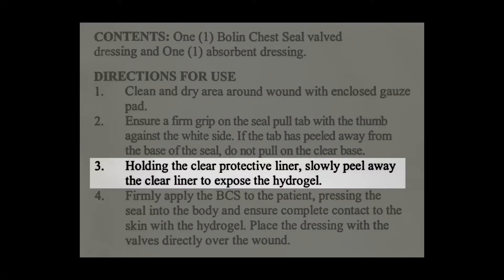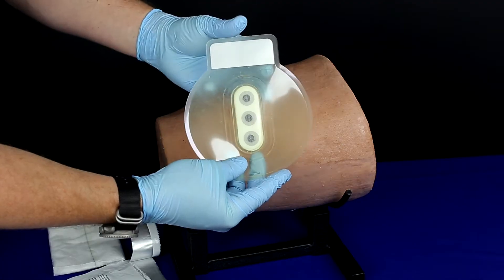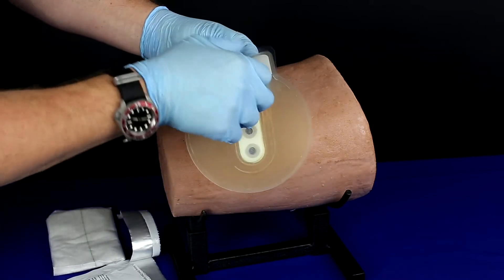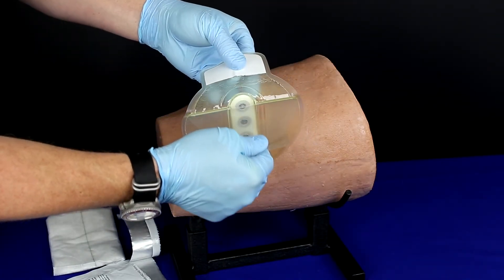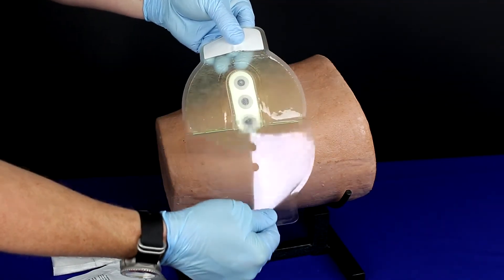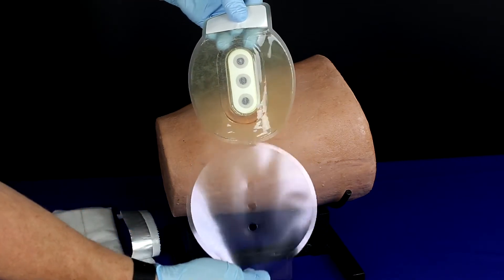Holding the clear protective liner, slowly peel away the clear liner to expose the hydrogel. Carefully peel the protective liner away from the chest seal. Use caution to avoid touching the adhesive surface or allowing the seal to touch the patient or another object.